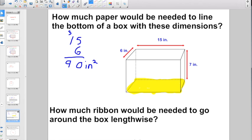Let's take a look at the next part of the problem. It says how much ribbon would be needed to go around the box lengthwise? Around the box lengthwise, this would be - I'm gonna tie a ribbon here and then I'm gonna go along here, and then I'm gonna go along here with the ribbon, and then I'm gonna go back here. Is that an area problem? No, it is not. That is a plain old perimeter problem.